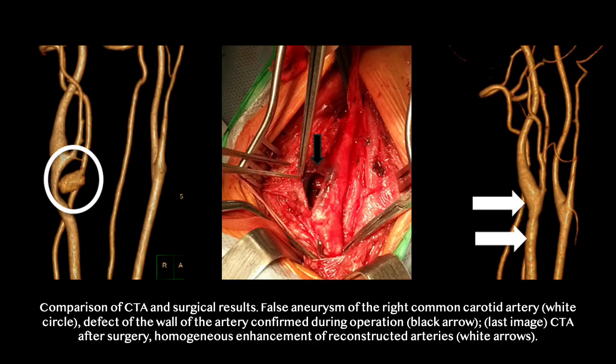Here is another image at the carotid bifurcation comparing CTA and surgical results. There is a false aneurysm of the right common carotid artery shown by the white circle on the left image. The defect of the arterial wall was confirmed during operation, as seen with the middle surgical photo and the black arrow. The last image to the right is a post-surgical angiogram showing the false aneurysm has completely resolved and returned to normal.